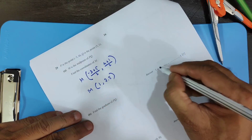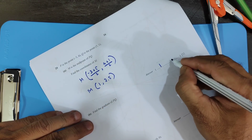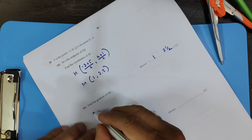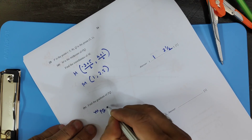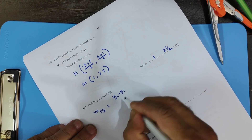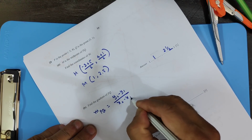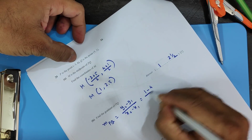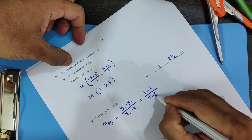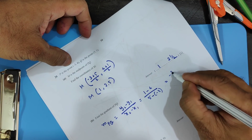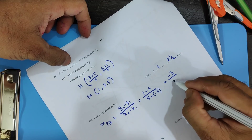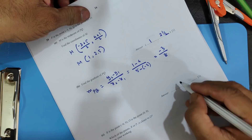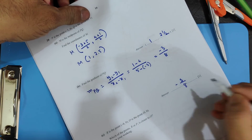So M's y-coordinate is 5 divided by 2 equals 2.5, so M is (1, 2.5) — you can write 2.5 or 2 and a half. Now find the gradient of PQ: difference in y over difference in x. That gives 1 minus 4 over 5 minus minus 3, which is minus 3 over 8.